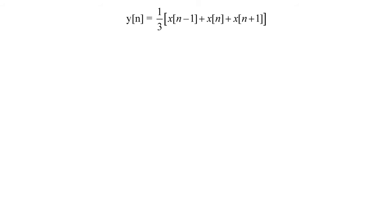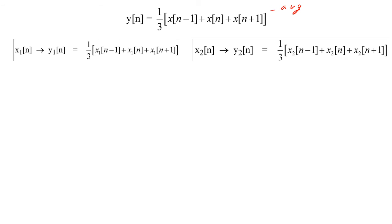Here is an example of a linearity proof. Suppose we have a filter that averages the value of three samples to create y of n. To check for linearity, we need to see if the superposition property holds. Let's create two inputs, x sub 1 of n and x sub 2 of n, and multiply them both by different constants, a and b. If we add them together and enter the sum into our system, we would obtain this output.